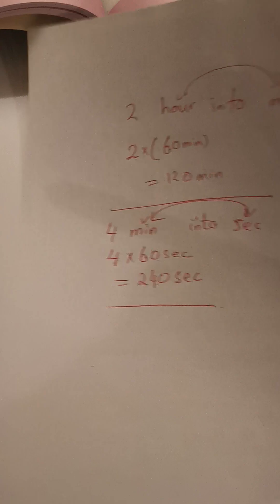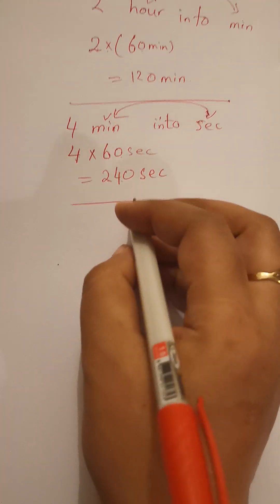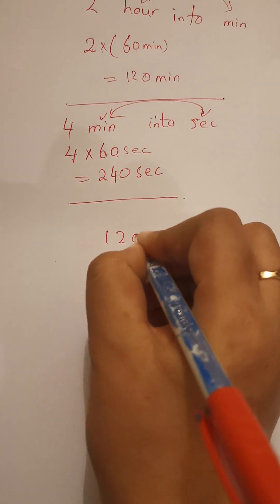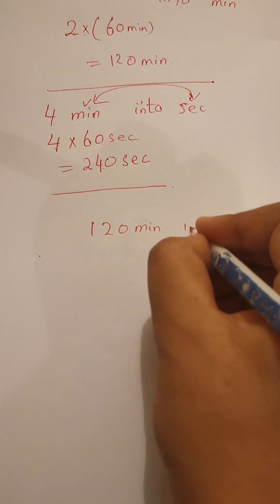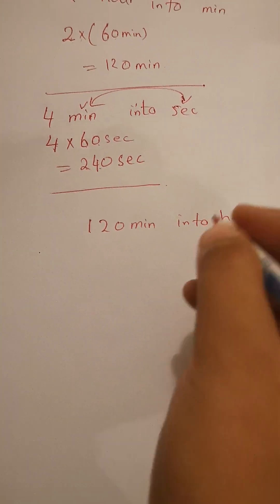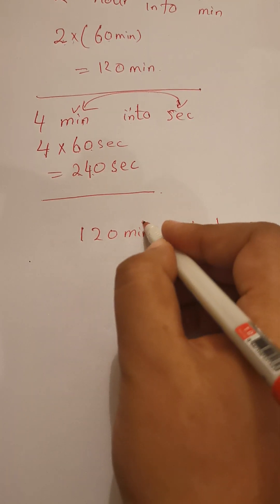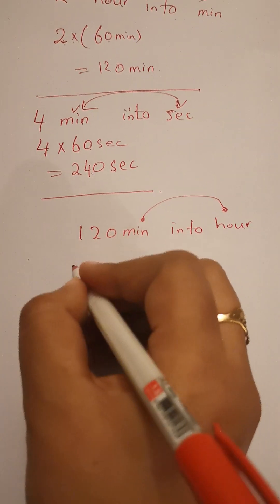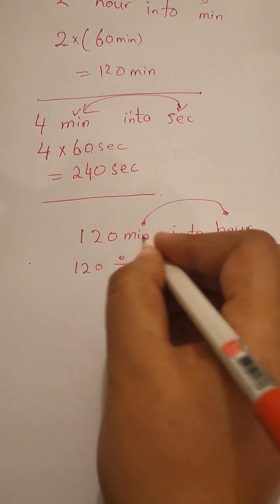Now we are going to do from small to big. Like, if we have 120 minutes, then how many hours? So we are changing from smaller unit to bigger unit, which means we will divide. How many minutes in one hour? 60. So 120 divided by 60.